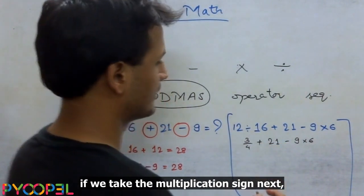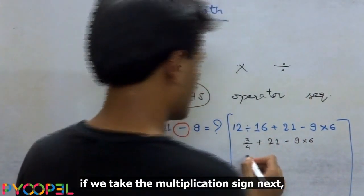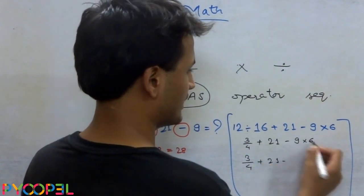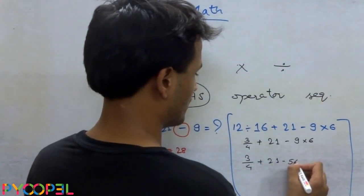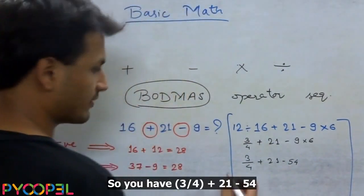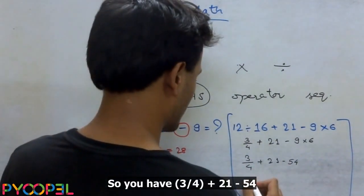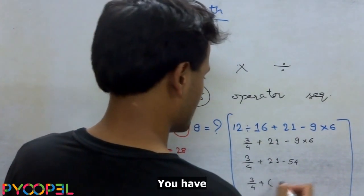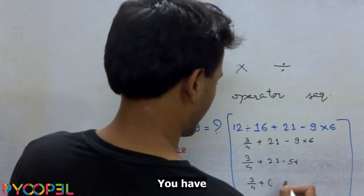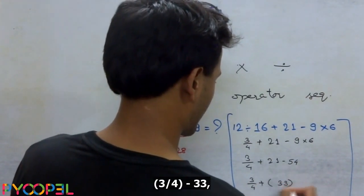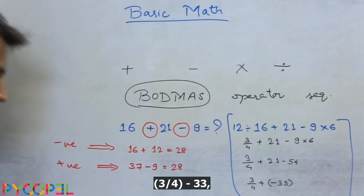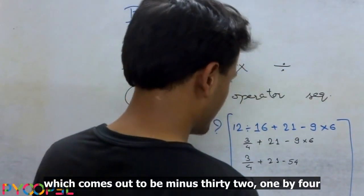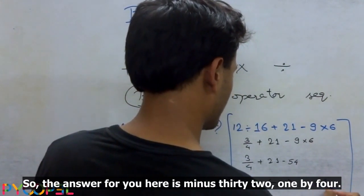Now if we take the multiplication sign next, it becomes 3 by 4 plus 21 minus 54. So you have 3 by 4 plus 21 minus 54. Let's take the minus sign first. You have 3 by 4 minus 33 which comes out to be minus 32 and 1 by 4. So the answer for you here is minus 32 and 1 by 4.